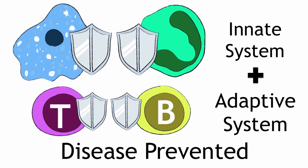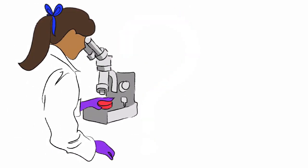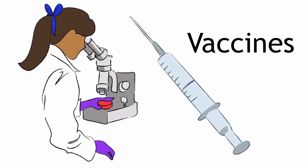There is still much that we do not understand about how the immune system functions. Scientists are doing research to understand this more precisely, and this knowledge can be used, for example, in the development of new and better vaccines.